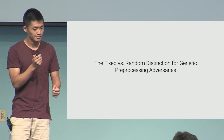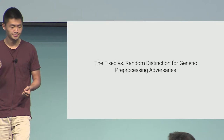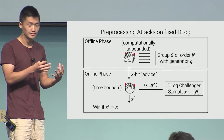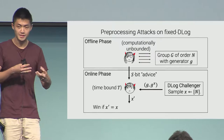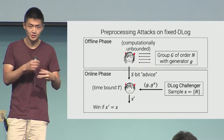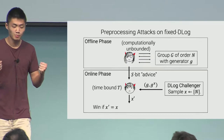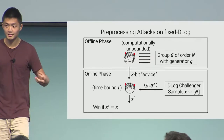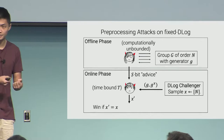For the rest of this talk, I'm going to change gears and look at a few other settings where the fixed versus random distinction is particularly important. The first is the fixed versus random distinction in the setting of generic pre-processing adversaries on group-based assumptions. In pre-processing attacks on discrete log, we have attacks that work in two phases. In the offline phase, a computationally unbounded attacker is given complete access to some group with a known fixed generator, little g, and tries to compute the most useful advice that will help it in the future to solve discrete log instances online. It comes up with an s-bit advice string.